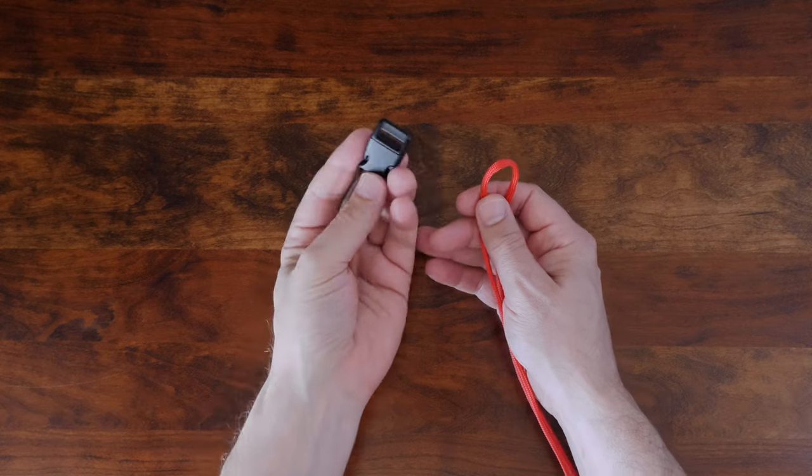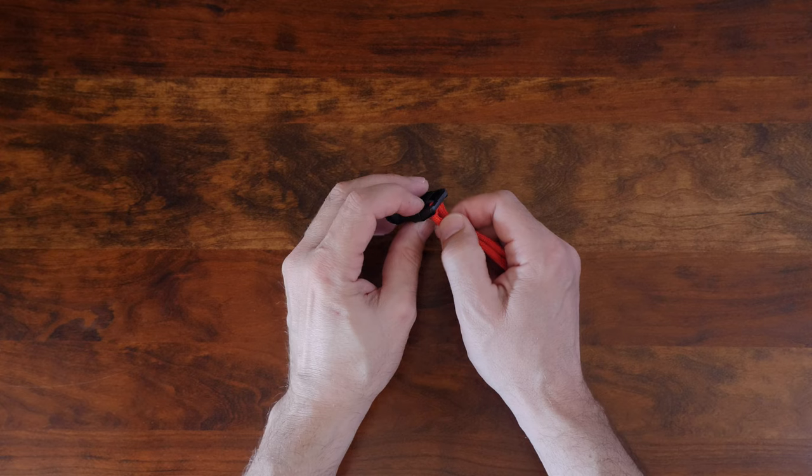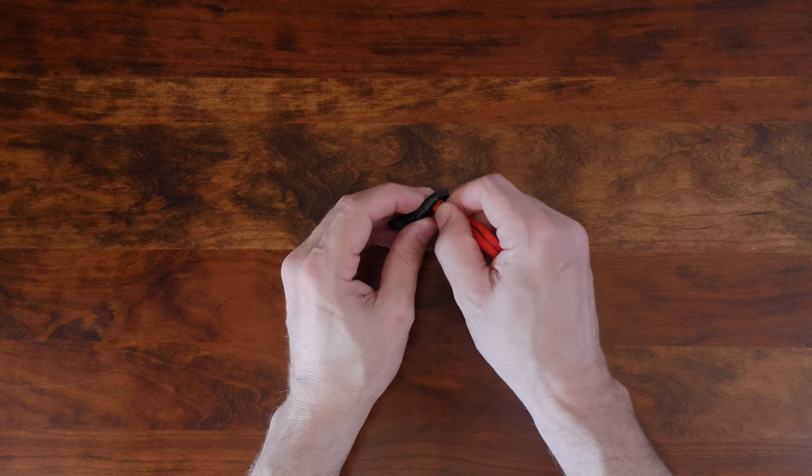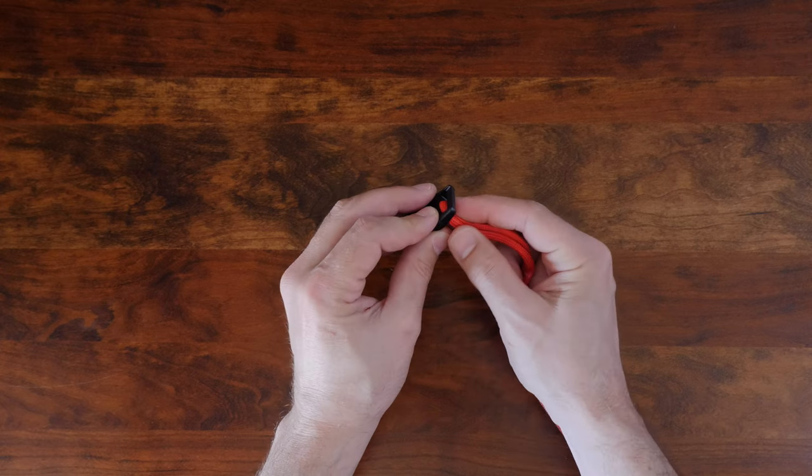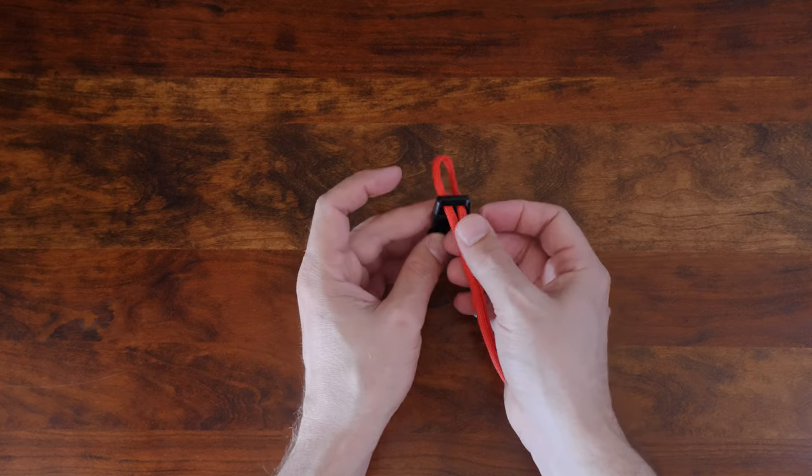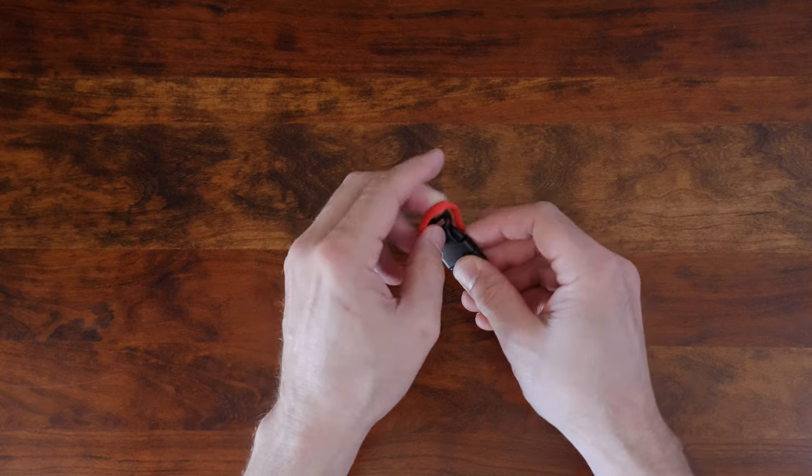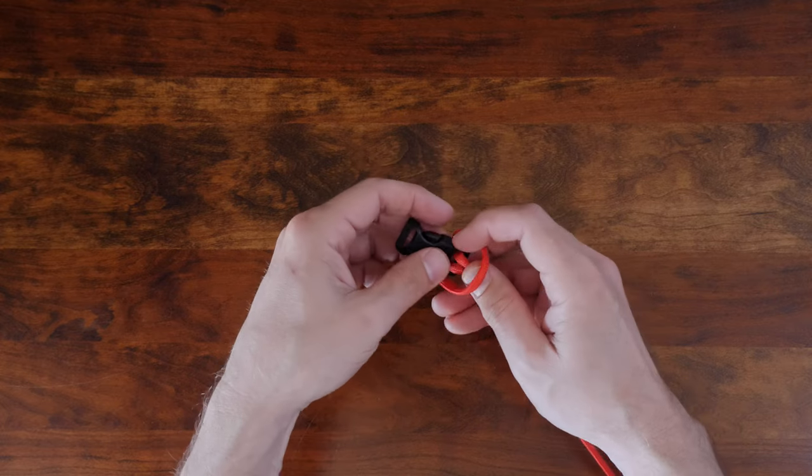I'm using a medium-sized buckle but you could use a small one and it would work just fine. To attach the paracord buckle I'm going to feed the center of my paracord through the top of the buckle and then pass the paracord around the buckle as shown to create a lark's head or girth hitch knot.